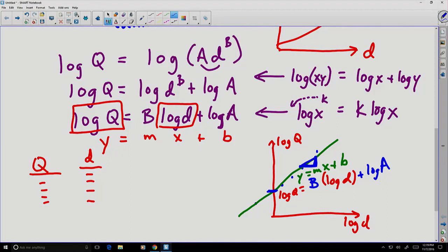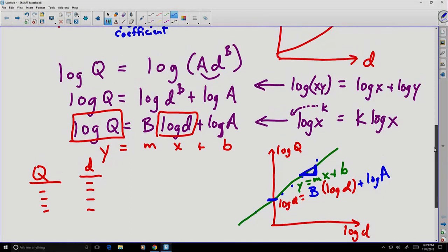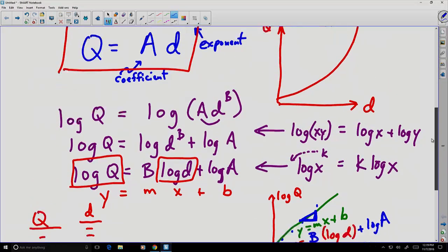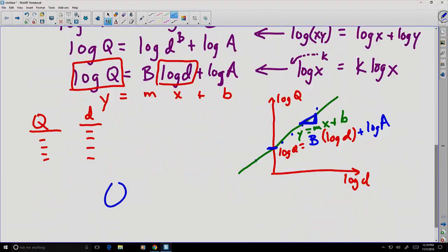If I plug those things back into my initial equation up here, Q equals A d to the b, let me rewrite that. Q equals A d to the b. Let me plug those pieces back in. And instead, I recognize that Q is equal to d to the m, in other words, the slope of this line.